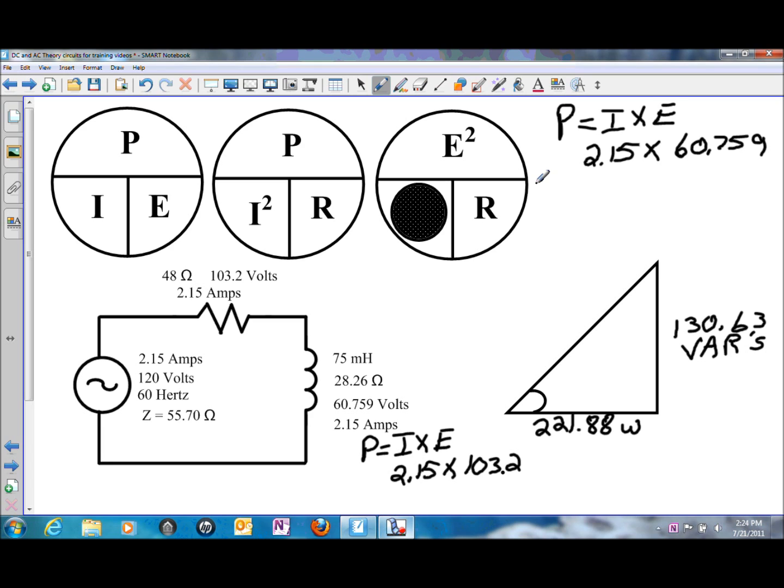Or we could apply Pythagoras theorem, which would be the watts squared plus the VAR squared to give us the total. And it provides you a means to prove it also. So I times E, or 2.15 amps of current flow, and this is going to be for total power, times 120 volts will give us 258 volt amps.